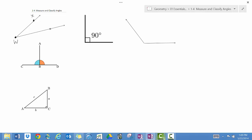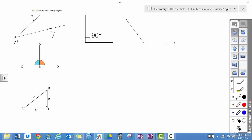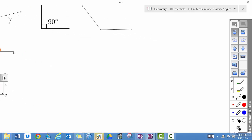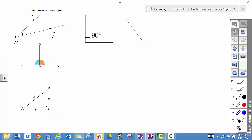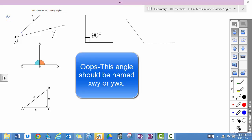We'll say this is X, Y. So we have here an angle which we denote by a little arc. And we call this angle, we can either say it is angle W, or we can say this is angle W, X, Y.